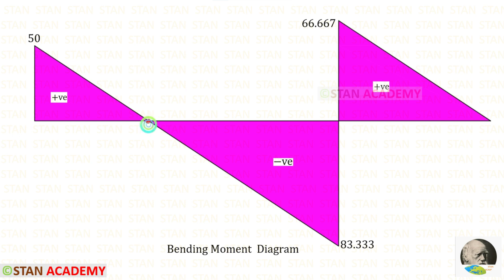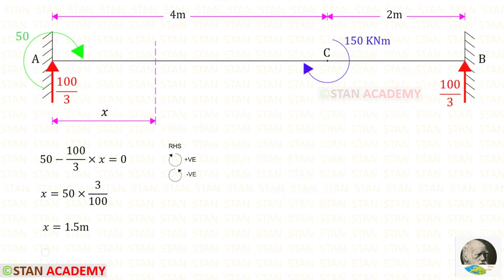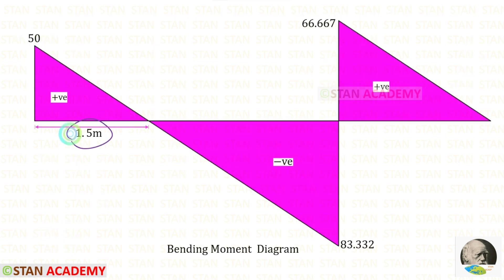This is the point of contra-flexure. At this point, let us make a section and find the distance. I have made a section at a distance of x from point A. In this section we find the moment and we know it is 0. Using that concept we can find x.